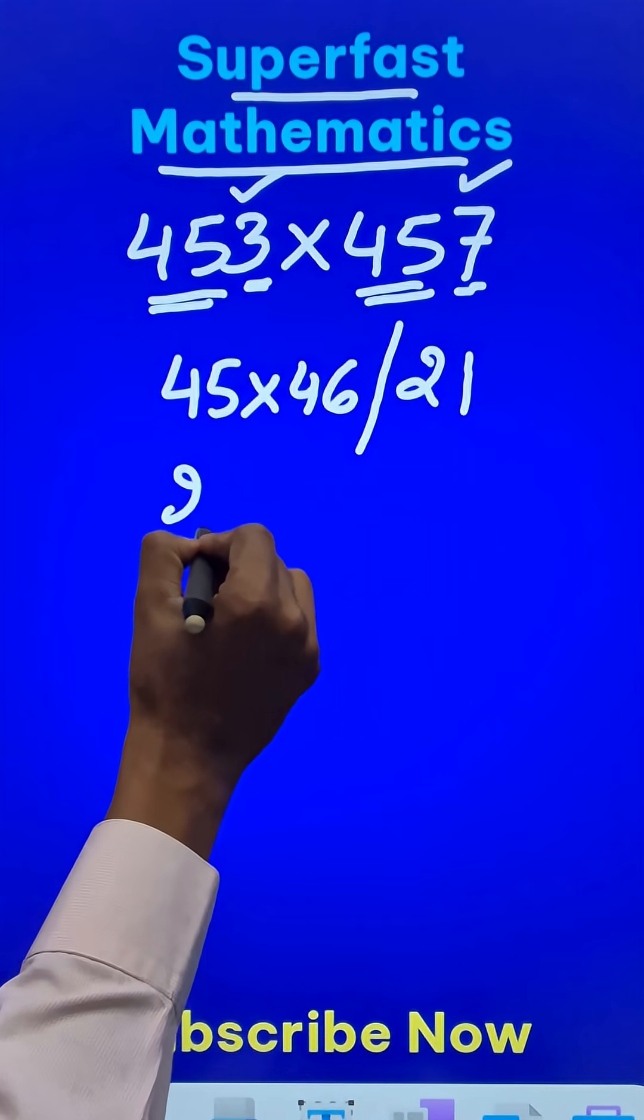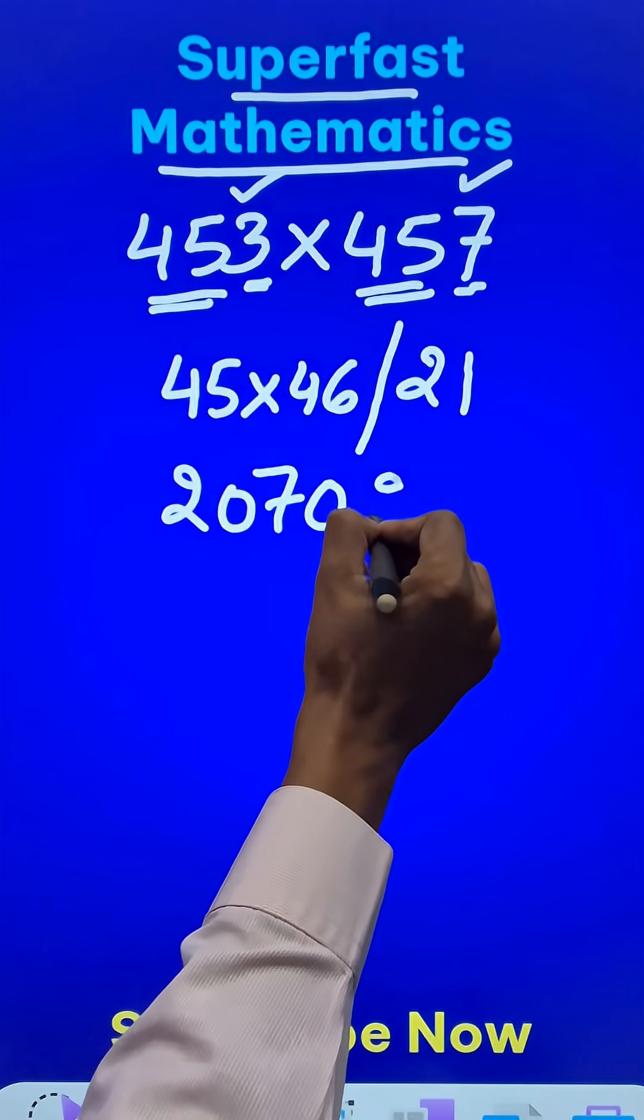So 45 times 46 will give you 2070, and suffix 21, you get your answer.